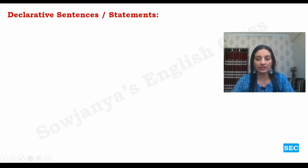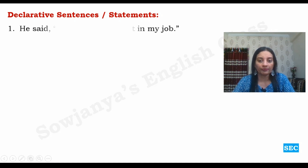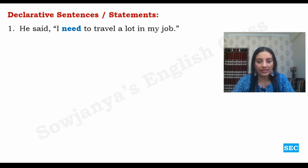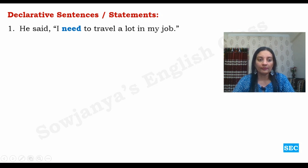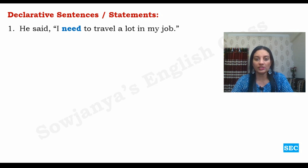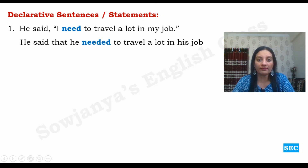Now let us look at declarative sentences — those are statements. As far as declarative sentences are concerned, the changes we have discussed are more than enough. We apply the backshift rule, pronoun changes, and time, place and demonstrative changes. One important thing is that 'that' acts as a conjunction when we transform declarative sentences into reported speech. 'He said, I need to travel a lot in my job' becomes 'He said that he needed to travel a lot in his job.' 'Need' has become 'needed' — simple present became simple past.